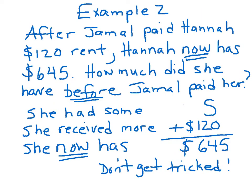For example 2, after Jamal paid Hannah $120 rent, Hannah now has $645. I underlined the now so that you would see that that's important. How much did she have before Jamal paid her? Well, she had some. We don't know how much. She received more. She received $120 from Jamal. She now has $645. Don't get tricked. We don't know how much she started out with, but we do know she received $120 and now has $645.